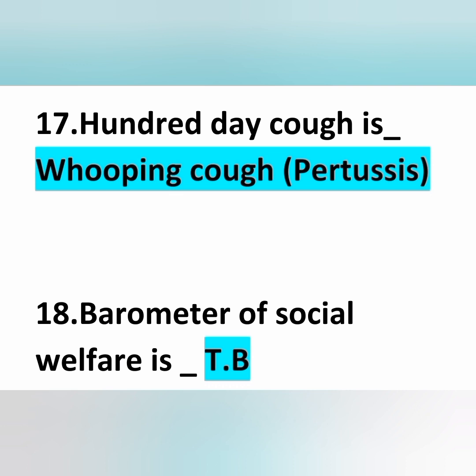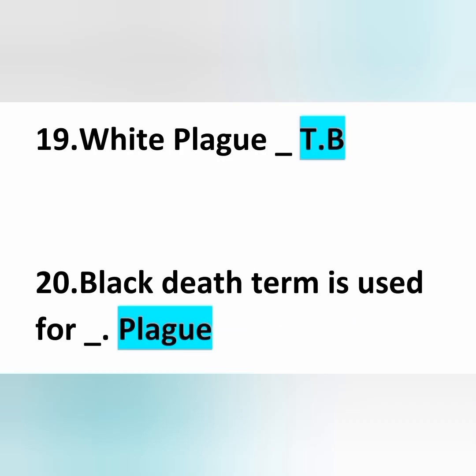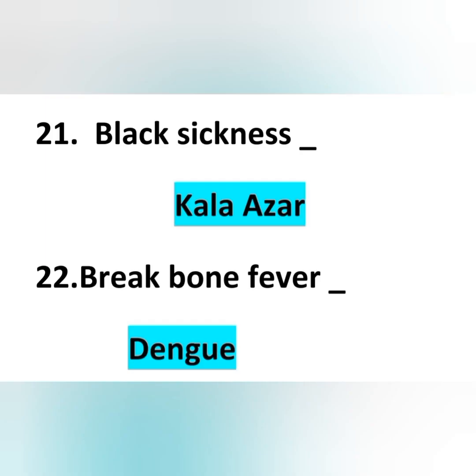TB is known as the barometer of social welfare and also as white plague. Black death is plague. Black sickness is kala-azar. Break bone fever is dengue. These are all important previous exam questions.